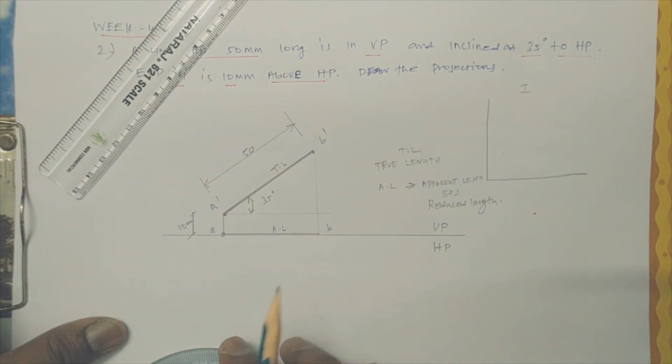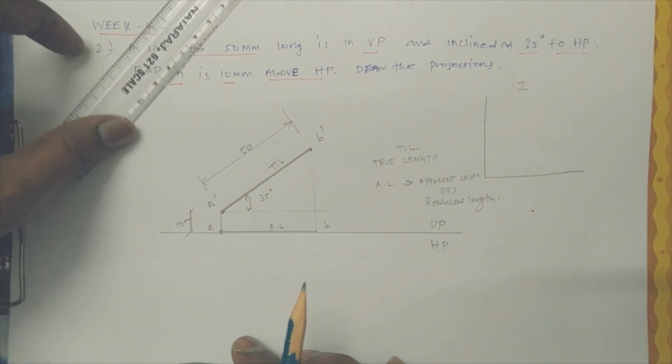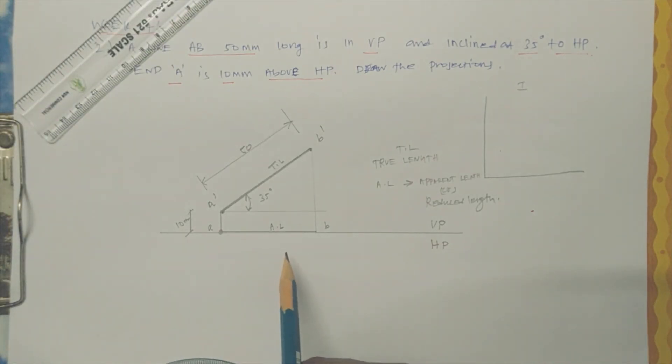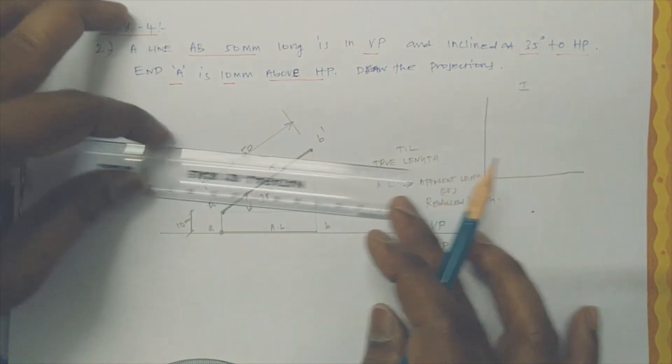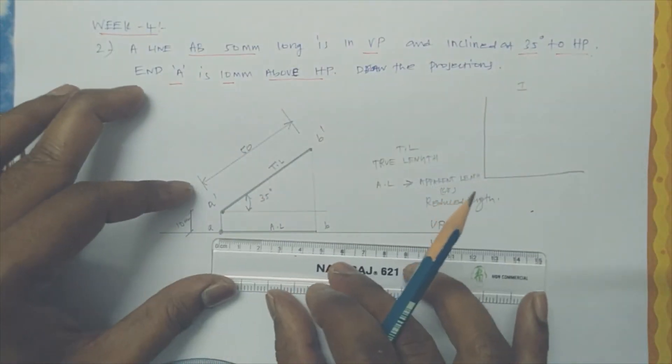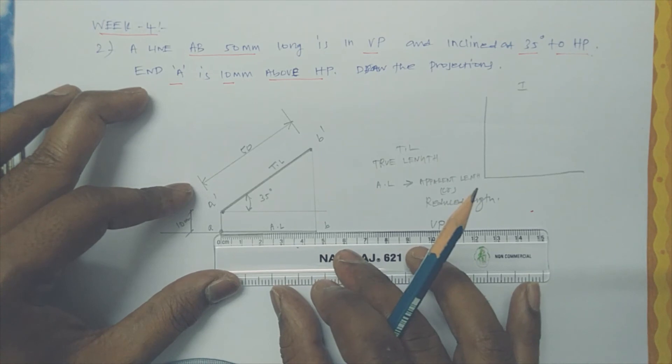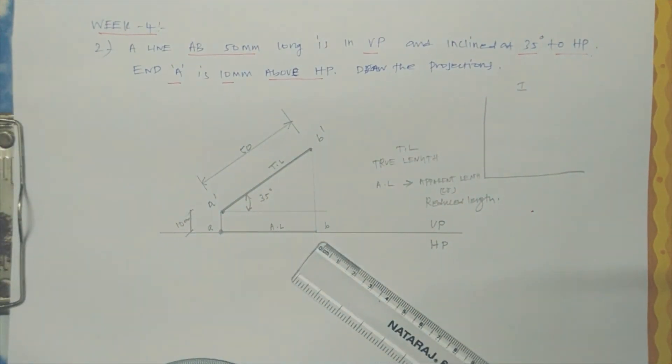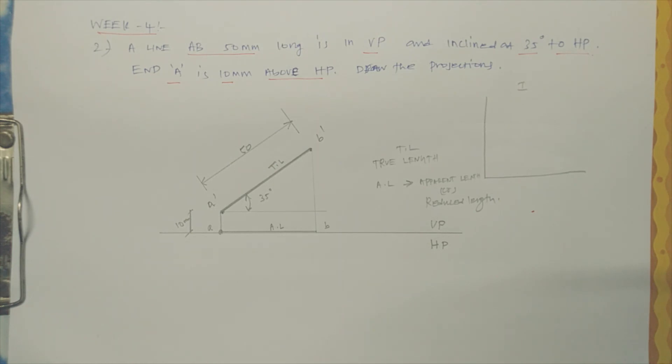So the final diagram is this. If they have asked what is the reduced length, you just measure and then you tell. If you are measuring it, it may be almost 45mm. So that's it, this is a projection of line.